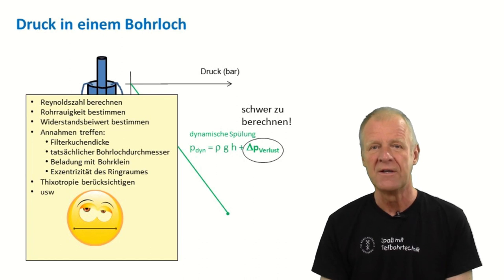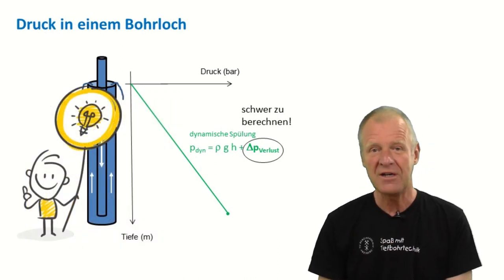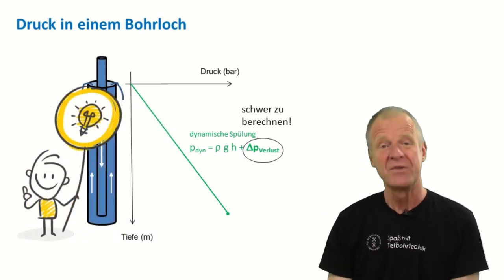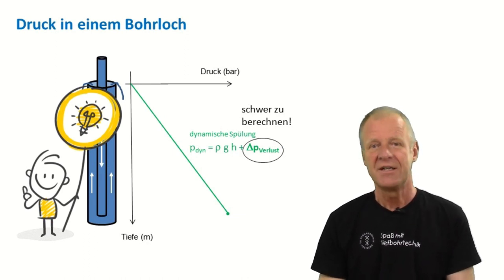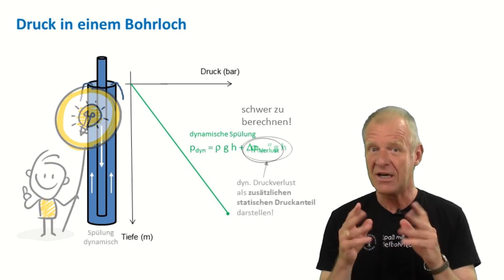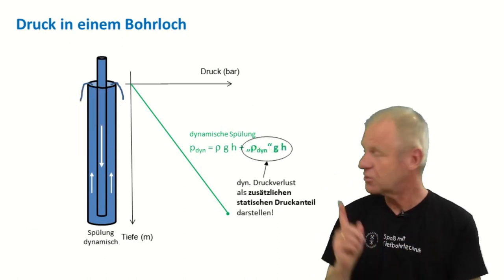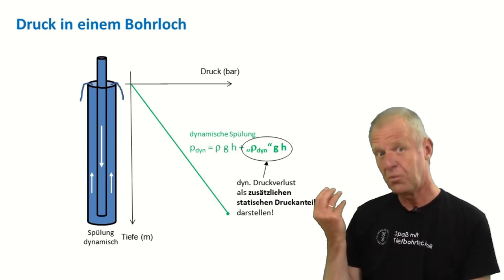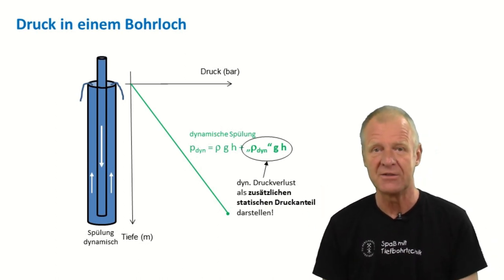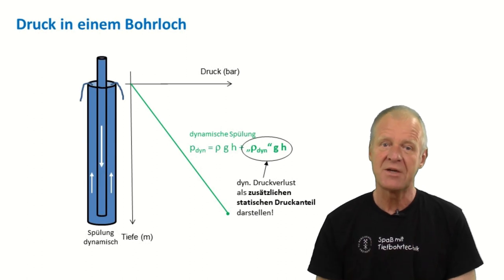But drillers always have great ideas. So what they did is, they stated that the dynamic pressure component can be expressed just as a kind of additional static pressure, which can be expressed by another ρgh formula. This is pretty cool, because we can further simplify this formula a bit.